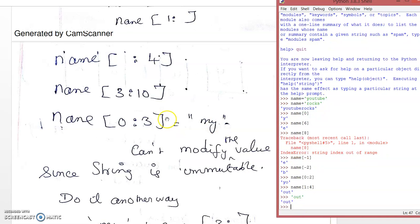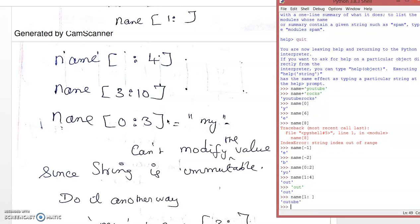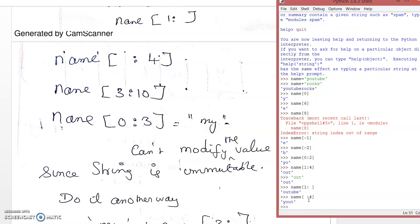Using name[1:] with no end value — starting from index 1 with no end — it will print the whole string from index 1 till the end. Using name[:3] with no start value, it starts from the beginning and prints up to index 2 — the third index value — like the range function.